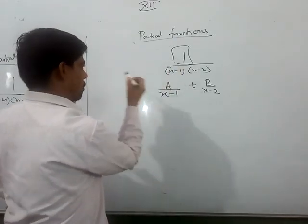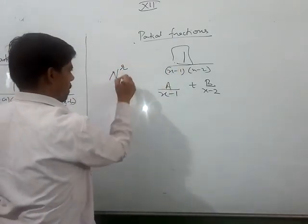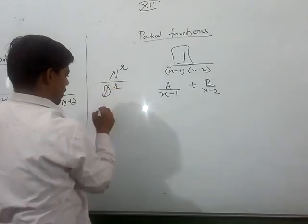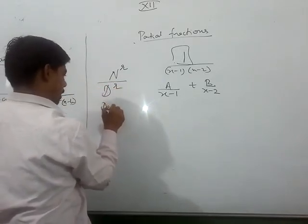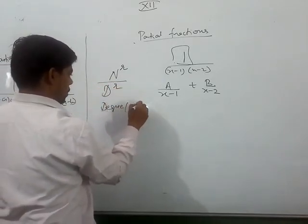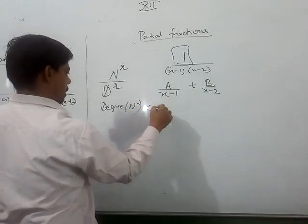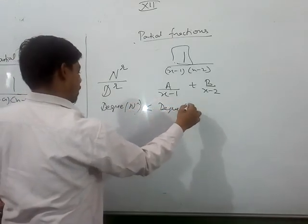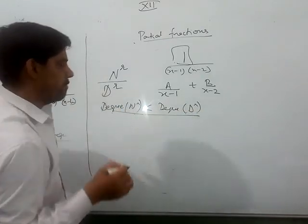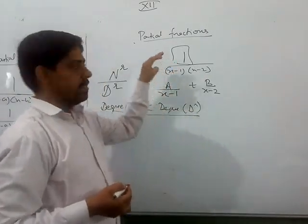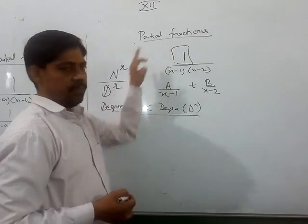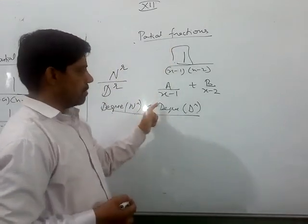The degree of numerator should always be less than the degree of denominator. And if the degree is equal or greater, then you have to first divide. Divide, then partial fraction.